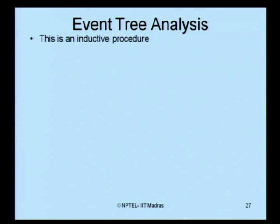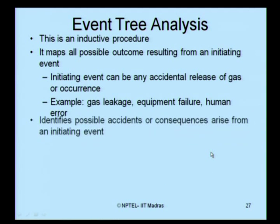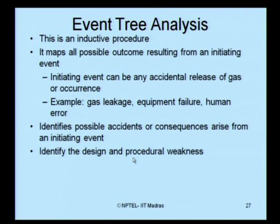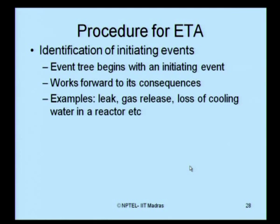When looking at event tree analysis, there are some important steps. This is actually an inductive procedure — it maps all possible outcomes resulting from an initiating event, which can be any accidental release of gas or occurrence of any event such as gas leakage, equipment failure, or human error. Event tree analysis identifies all possible accidents or consequences arising from the initiating event, identifies design and procedural weaknesses, determines the probability of various outcomes, and looks for the final consequences of such analysis.